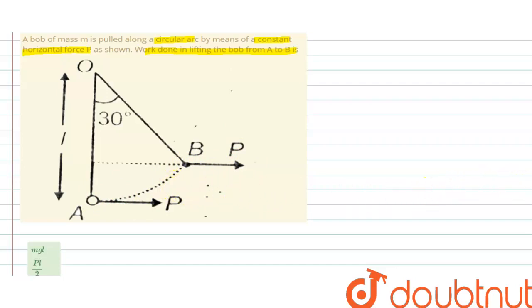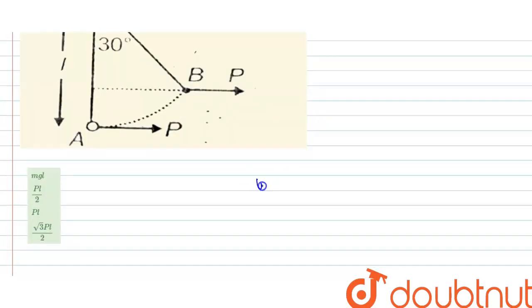So work done by a constant force is equals to force into displacement into cos theta, where theta is the angle between force and displacement.